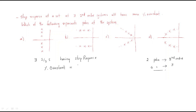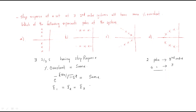Since overshoot is the same, the formula e^(-ζπ / √(1-ζ²)) must be the same for all three systems. For this expression to be equal across all three systems, the damping ratio ζ must be the same. So for system one, system two, and system three, ζ₁ = ζ₂ = ζ₃ — they all have the same damping ratio.